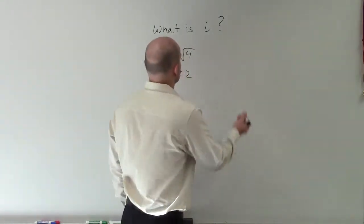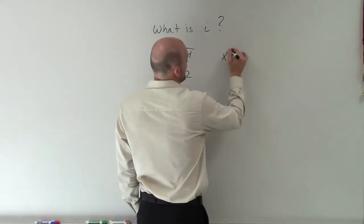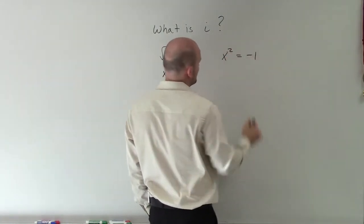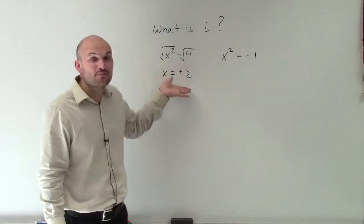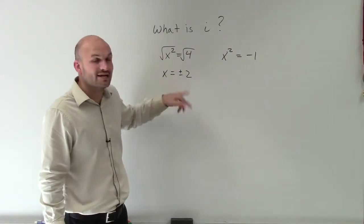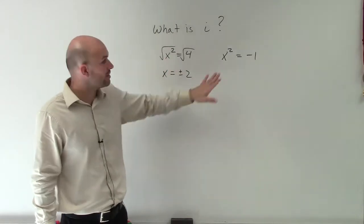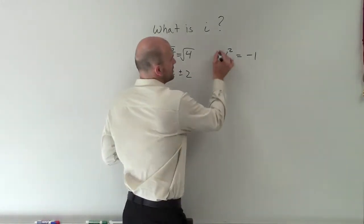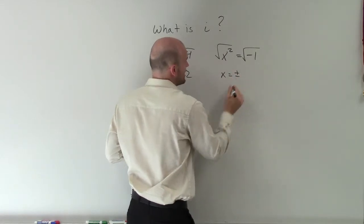Now, when dealing with i, let's say I have a quadratic equation which equals negative 1. Now, in this case, we know that positive 2 times positive 2 equals 4, and negative 2 times negative 2 would equal 4. So if I was going to solve this quadratic equation, I would do the same thing. And then x would equal plus or minus.